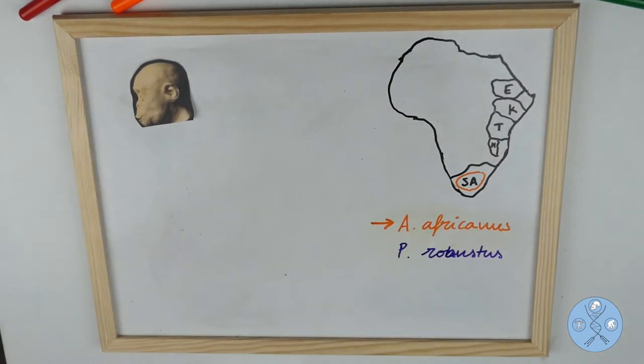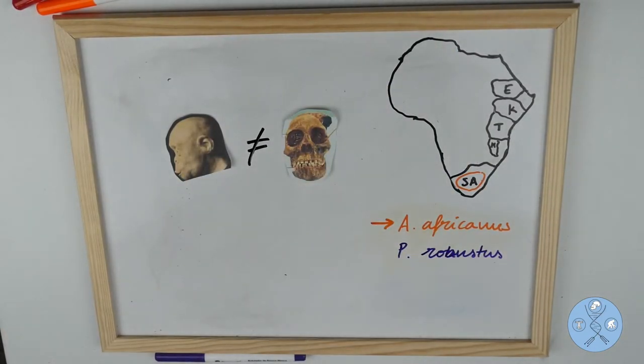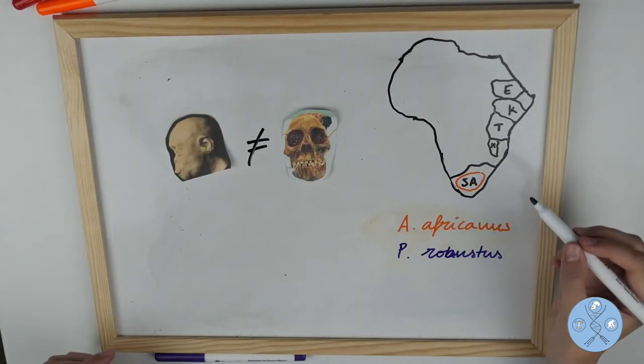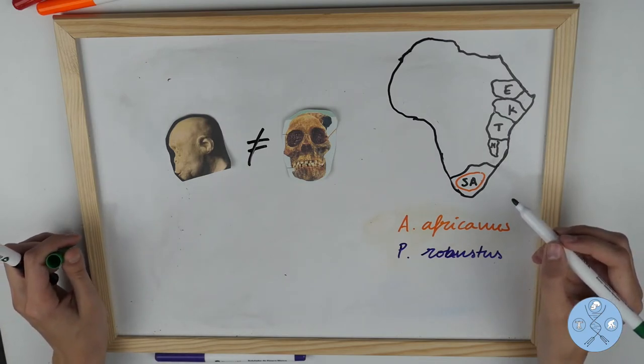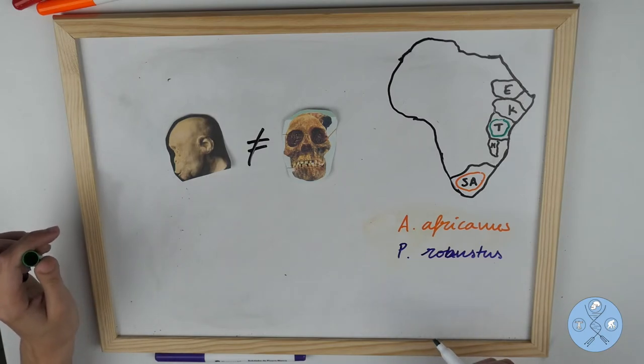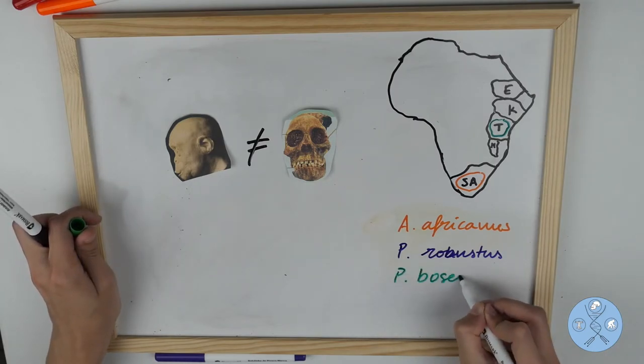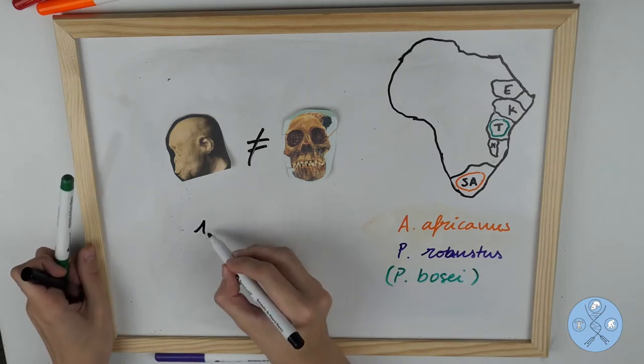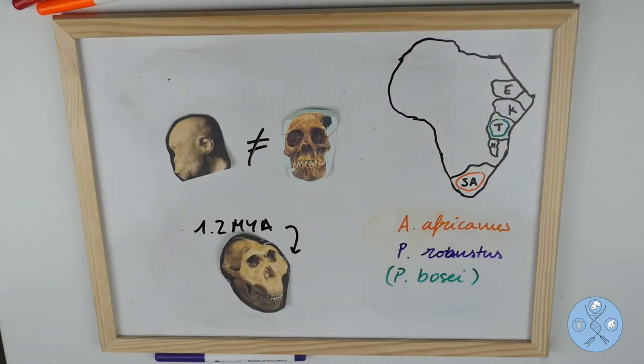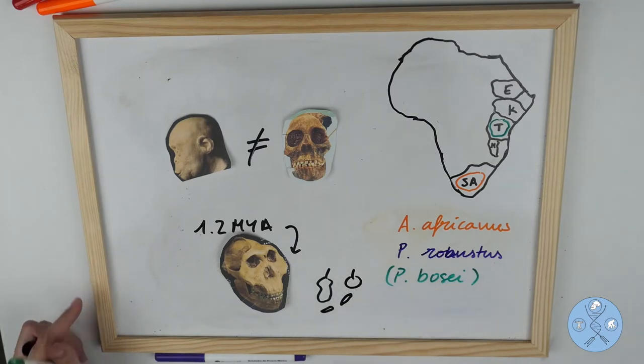Another evidence that Paranthropus robustus and Australopithecus africanus were different species came when they discovered a 1.9 million year old fragmented cranium in Tanzania, East Africa. Since then, more fossils have appeared in Ethiopia, Kenya, and Malawi. Some researchers call it Paranthropus boisei. It had larger chewing teeth, but its canines and incisors were small. It is thought that its main diet consisted of seeds and fruits with hard outer coverings, meat, plant food, and insects.